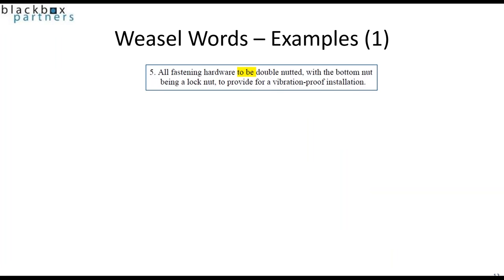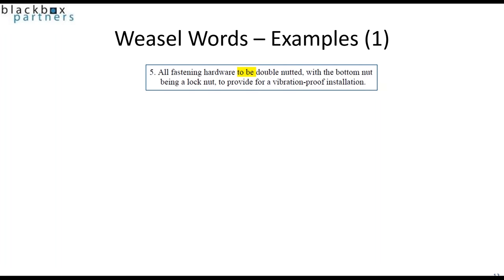An example of weasel words — and by the way, this is from an actual statement of work used on contract by one of the participants in one of Black Box's many writing statements of work classes. From the contract: 'All fastening hardware to be double nutted with bottom nut being a lock nut to provide for vibration proof installation.' This 'to be' phrasing is not clear about who will do the work, when it will be done, or by whom. Clarifying the language would look like: 'The vendor shall double nut all fastening hardware. The bottom nut on a double nutted item of hardware must be a lock nut to create a vibration proof installation.'